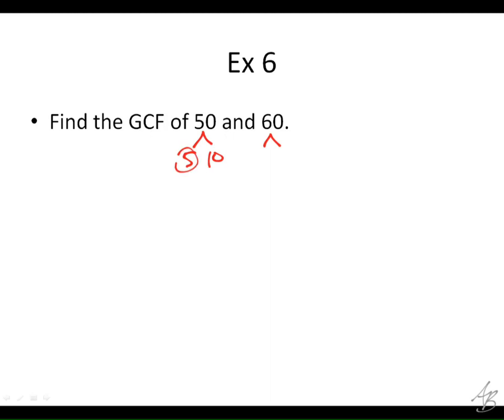So for 50 we've got 5 times 10 and 2 times 5. For 60, that would be 6 times 10, and then the 6 is 2 times 3, and 10 is 2 times 5. With your factor trees, you can do them any way you want — you should get the same factors in the end.